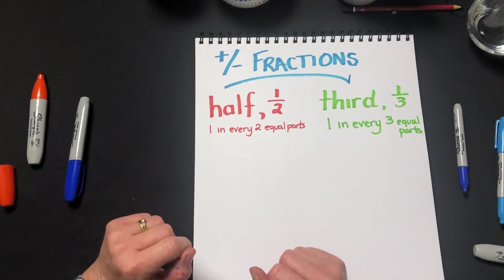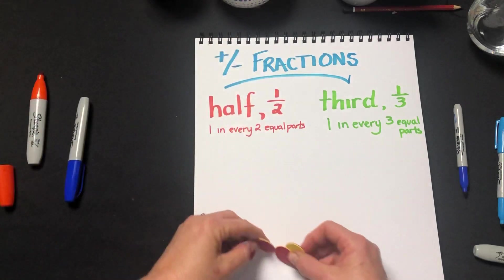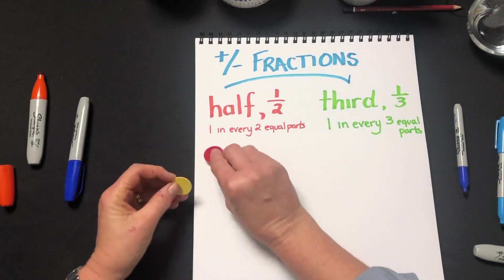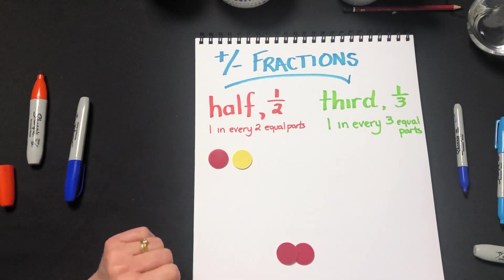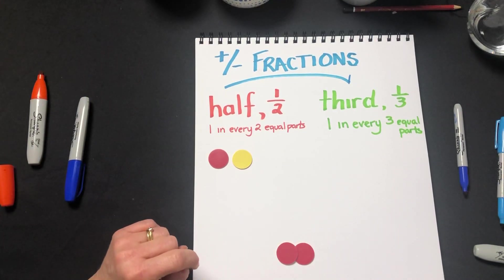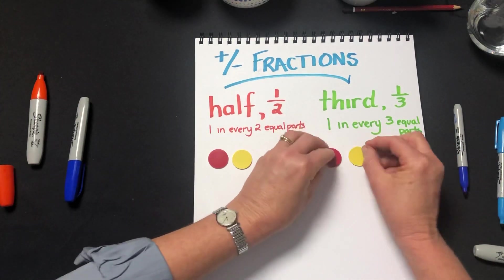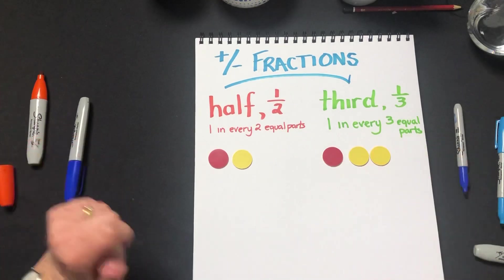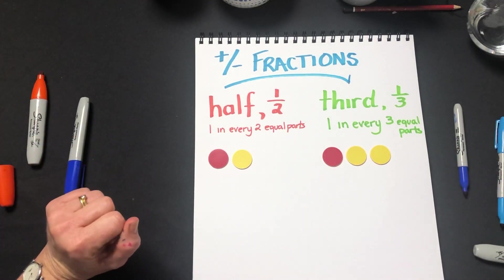Let's have a look at how we can use a collection. By a collection I'm talking about one in every two. Half of the counters, the collection of counters are red. Over here for a third, one in every three of the counters is red.